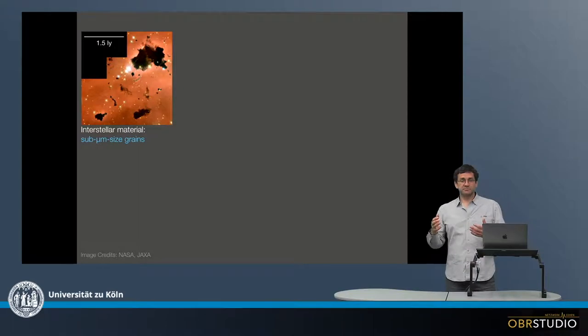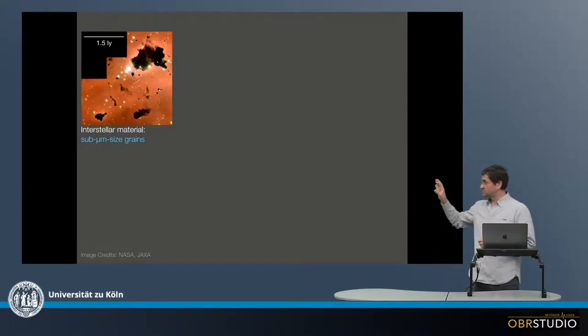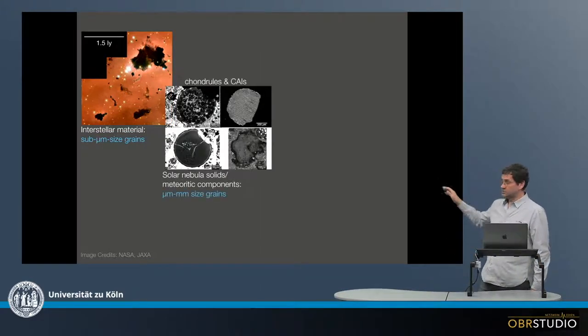Now in the early solar system, shortly after the protoplanetary disk formed, this small material transformed into larger material in a first growth step.